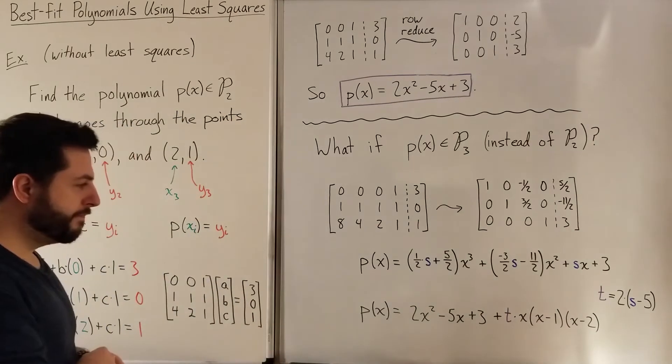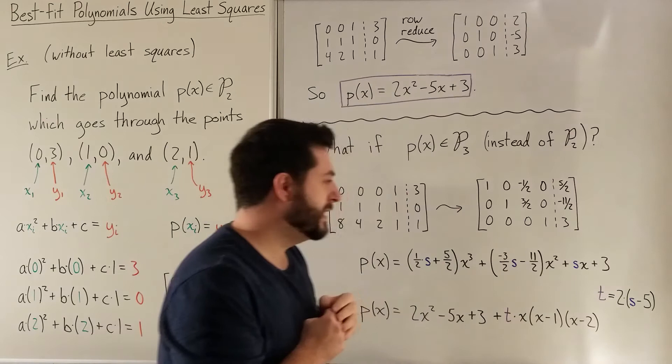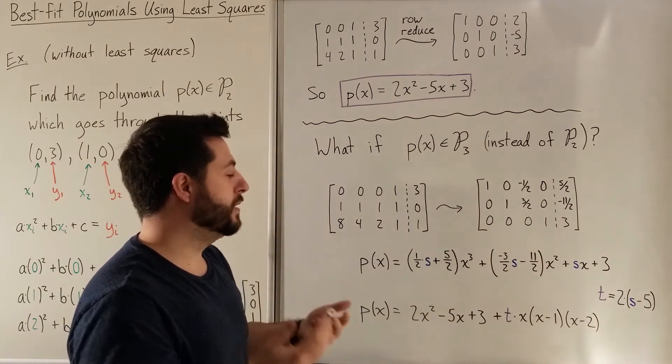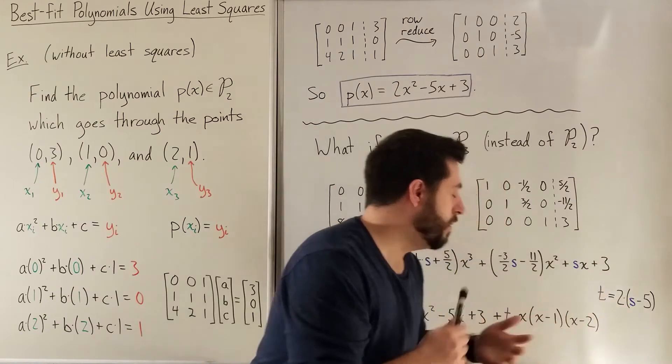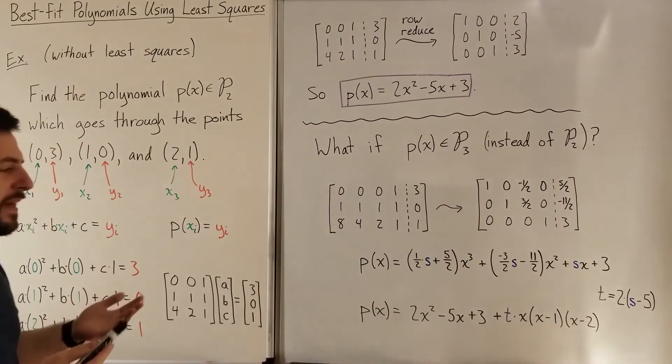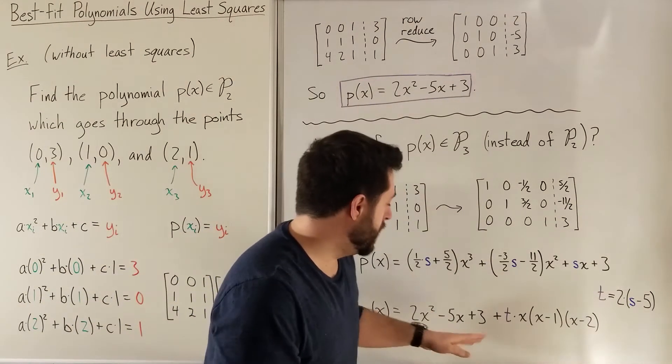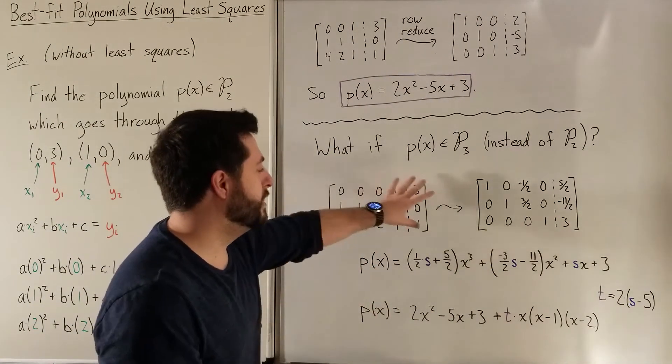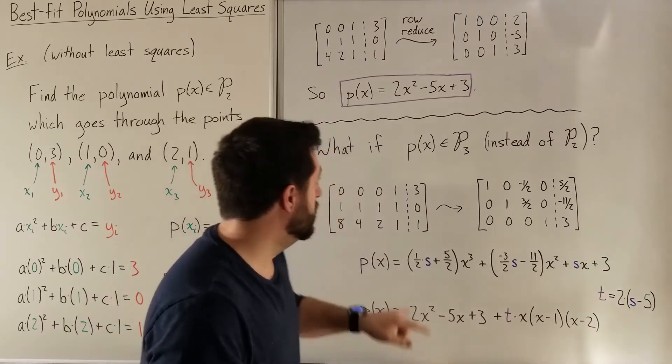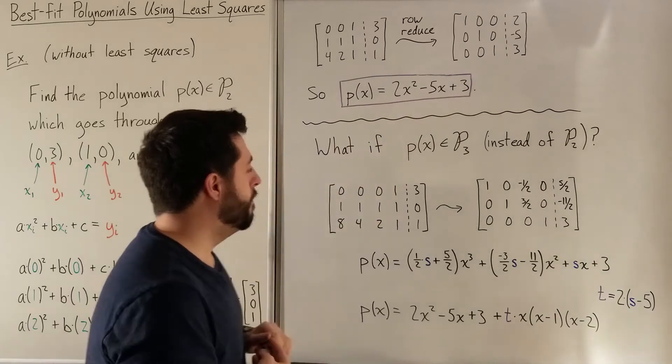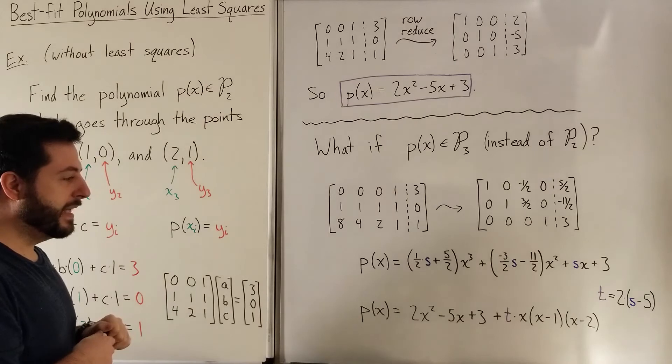Another way we could have done this. So I've written it here as just a reparameterization of this. Instead of using s, I want to use this variable t, and t is equal to two times the quantity (s-5), that's not so important. What I really want to focus on is this is just another way of thinking about how to come up with this without having to do the matrix in the first place. So we can take our original solution that we had for the first way that we did this. And this was unique. And then we can say, well,